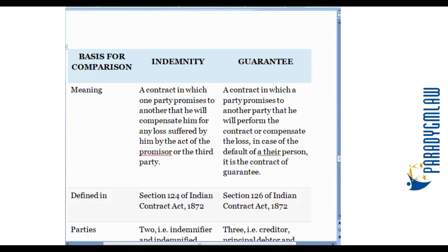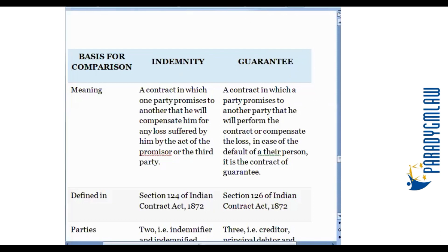If you look at the Indian Contract Act, it is Chapter 8 that talks about this specific type of contract. It is Section 124 that defines what is a contract of indemnity, and it is Section 126 that mentions what is guarantee and who are the parties to a contract of guarantee. We will see the difference between indemnity and guarantee, which will help you understand what is a contract of indemnity and guarantee.